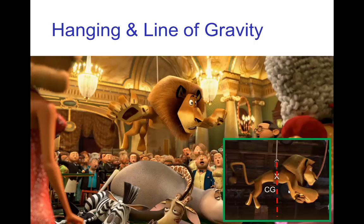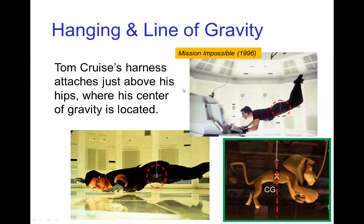Now you may realize this scene in Madagascar 3 is playing homage to the scene in Mission Impossible, where Tom Cruise is hanging from a wire. And of course, because Tom Cruise's center of gravity is located just above the hips, that's where the point of suspension for that harness is.